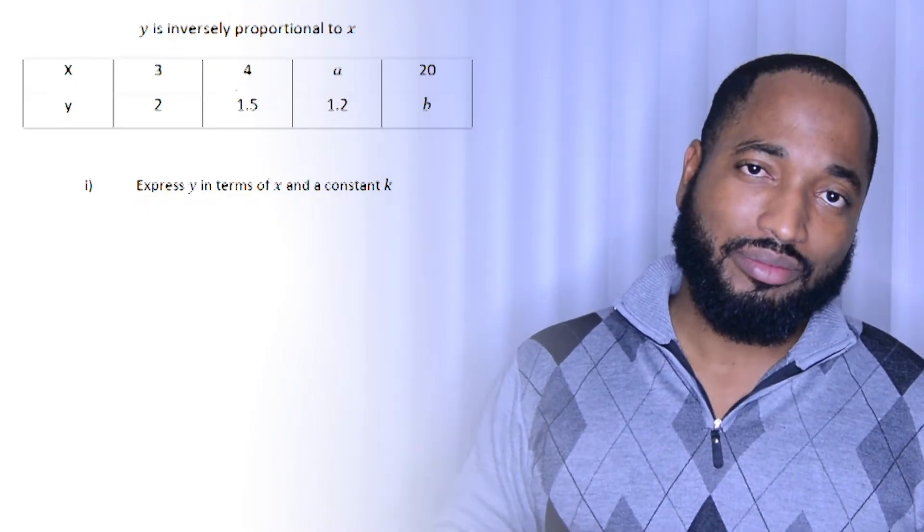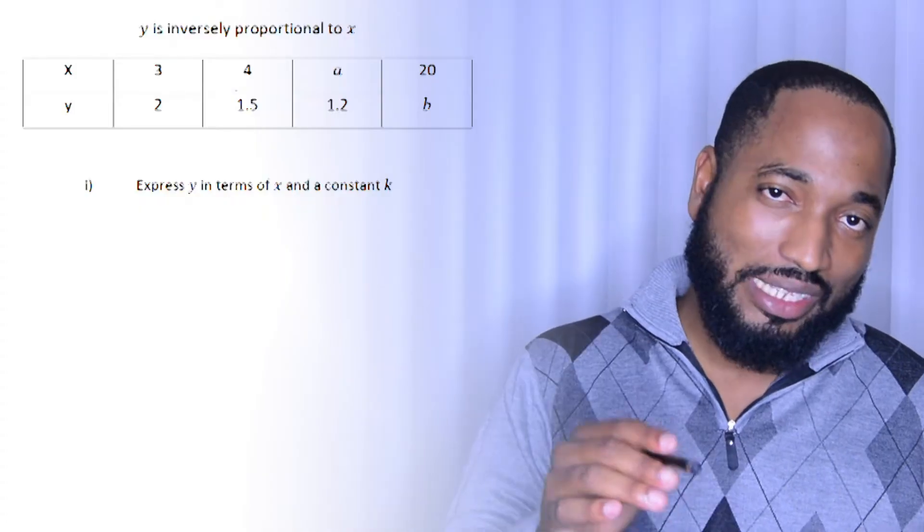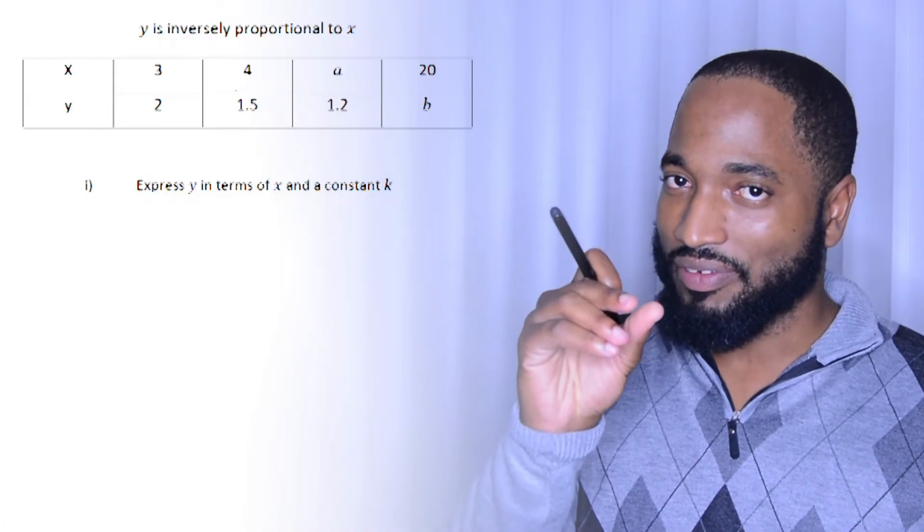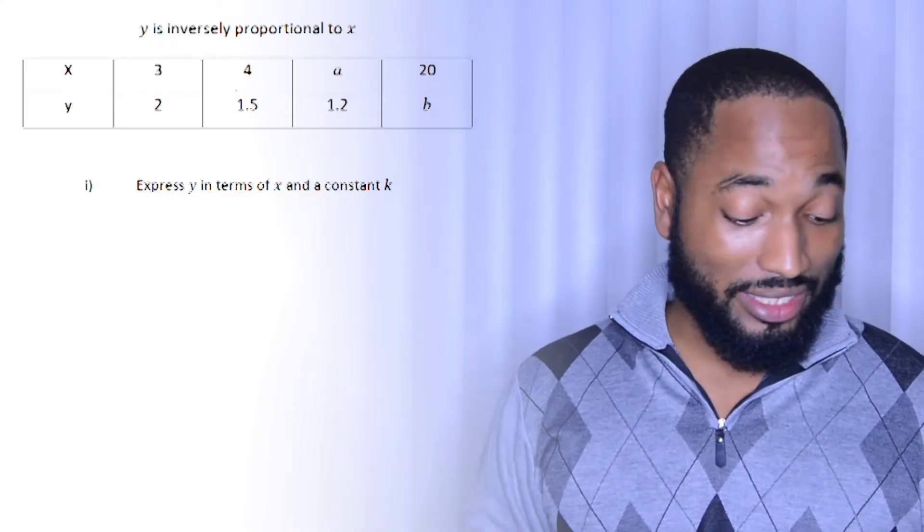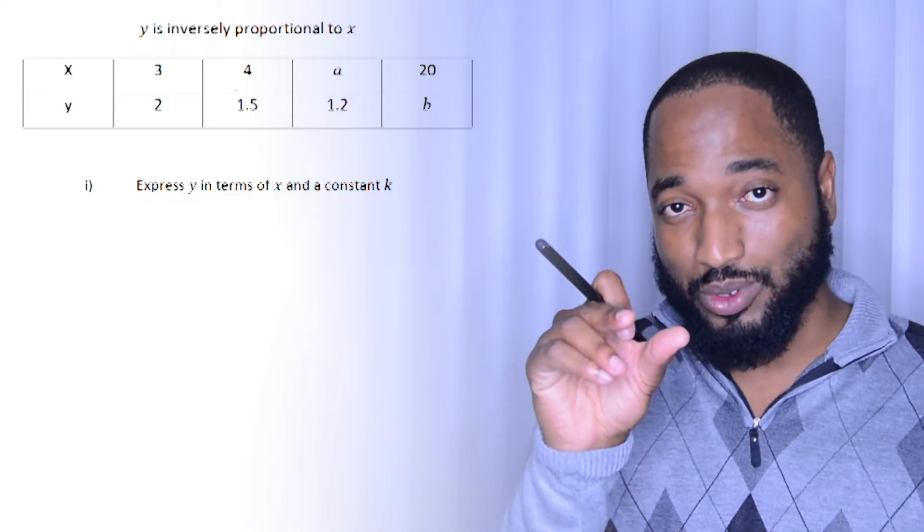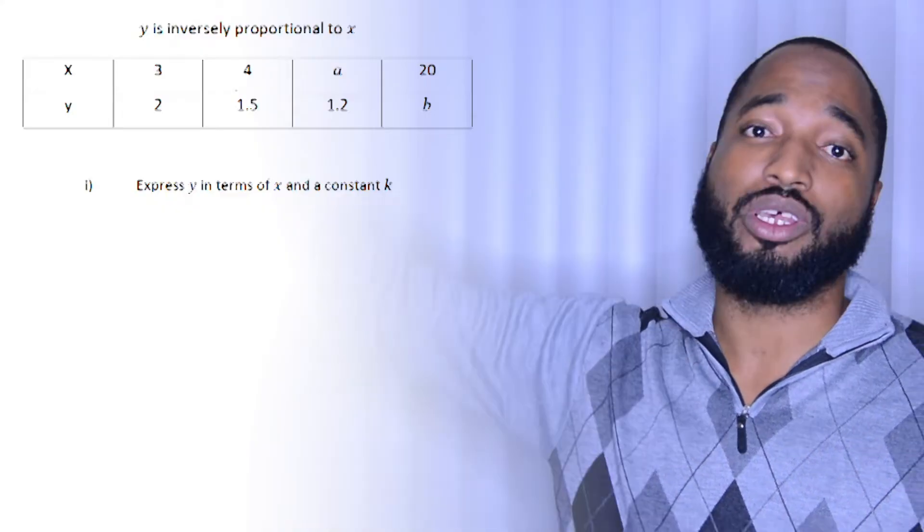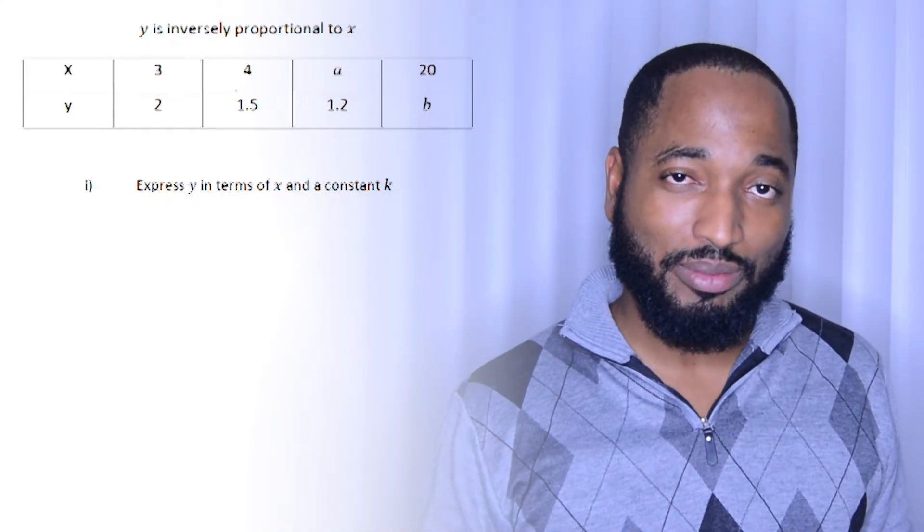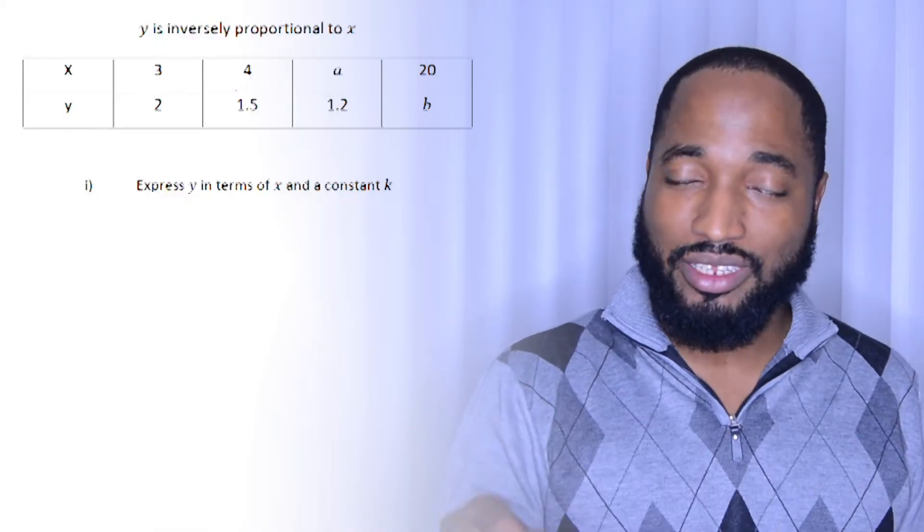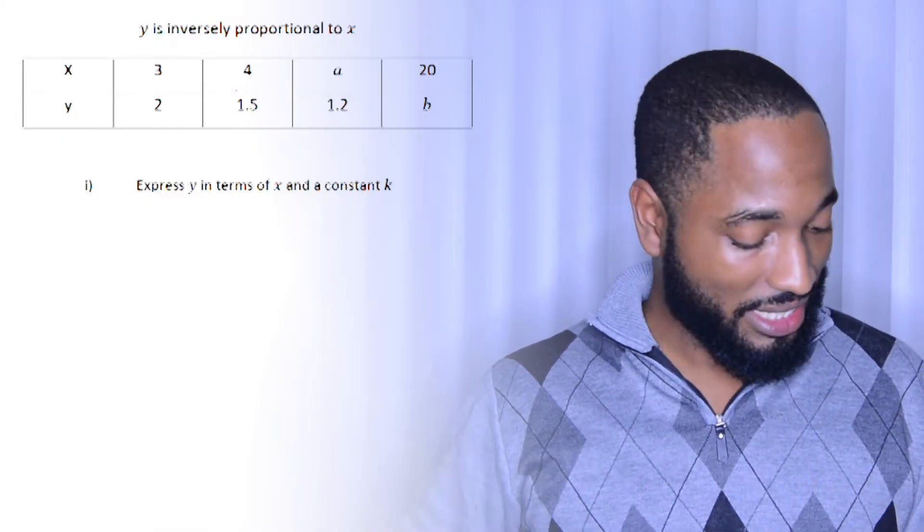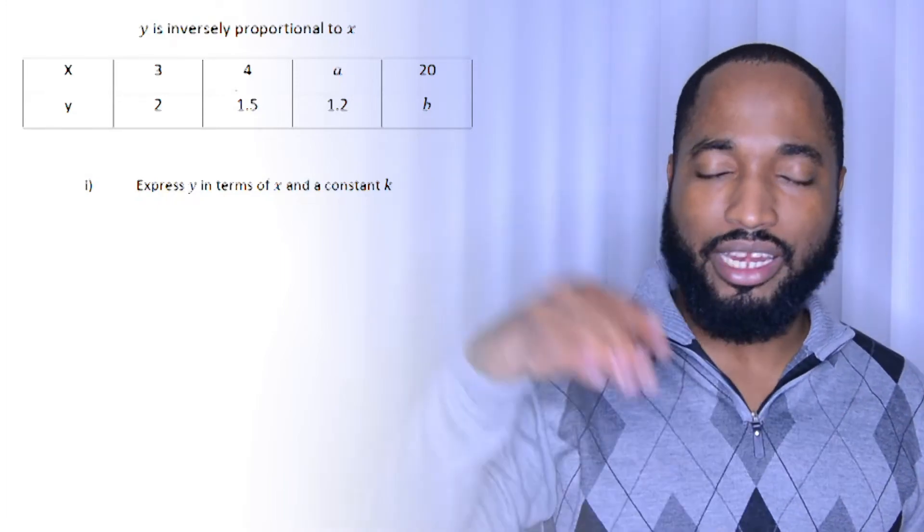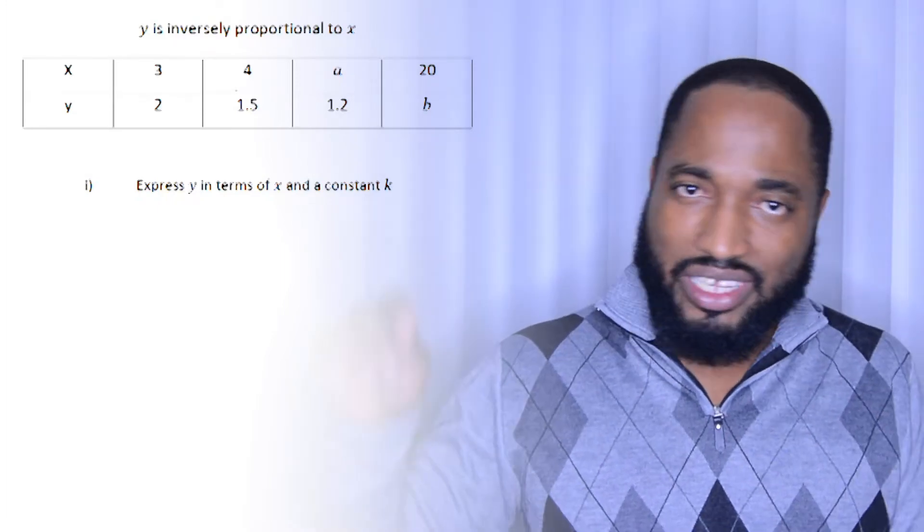I tell one of my private students that she has an inversely proportional relationship to the time left before exam. So as the time left to exam goes down, her panic goes up. So that's an inversely proportional relationship. Her panic is inversely proportional to time left till exam. So inversely proportional means that as something goes up, the next thing goes down.